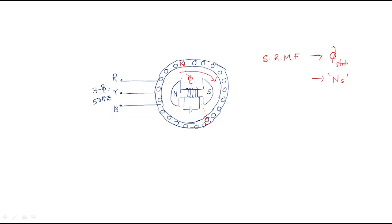Just observe here - for example, the pole formation is in a different area. Here the south pole is there and here the north pole is there. This north pole attracts towards the south pole, and the south pole attracts towards the north pole. These two rotor poles are interlinked with the stator two poles. The rotor has north pole and south pole; the stator has north pole and south pole - these two are interlinked. When the stator poles rotate with the synchronous speed, the rotor poles also rotate with the synchronous speed.